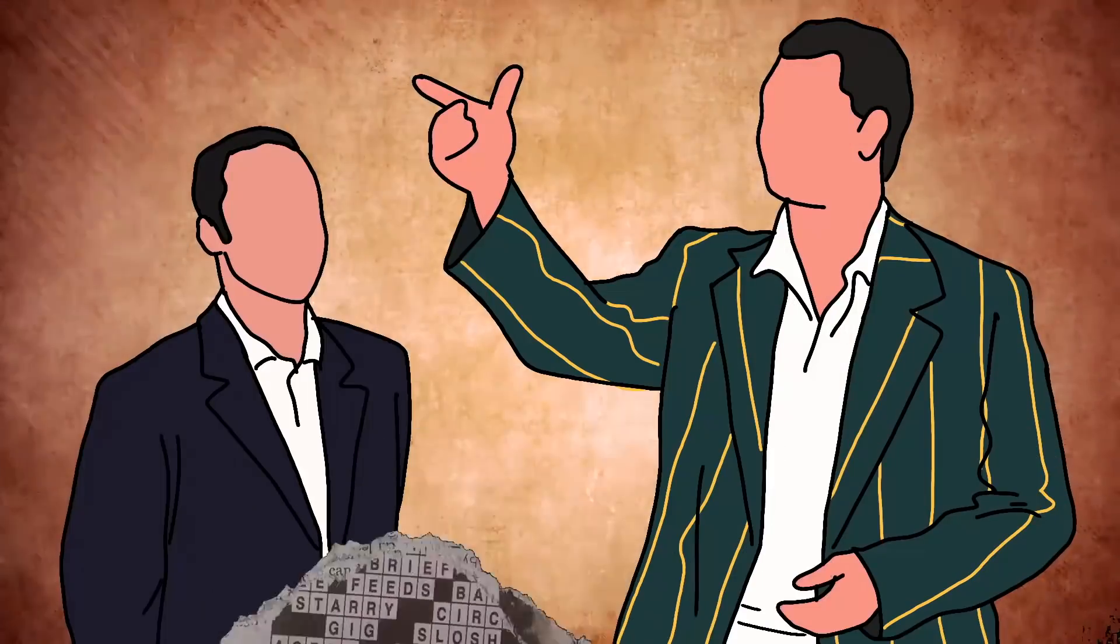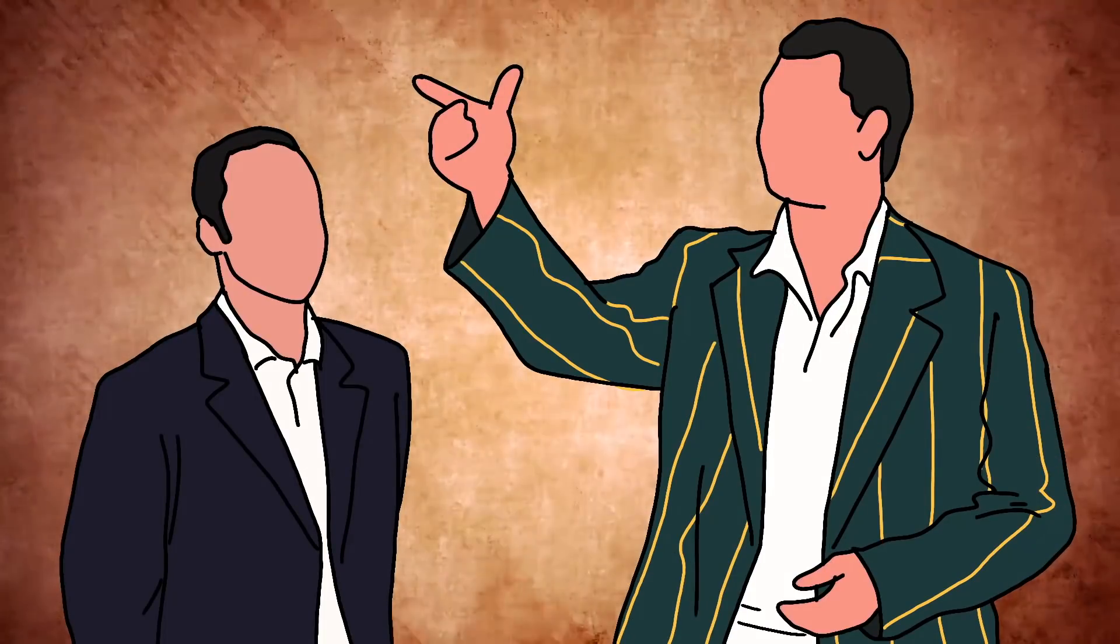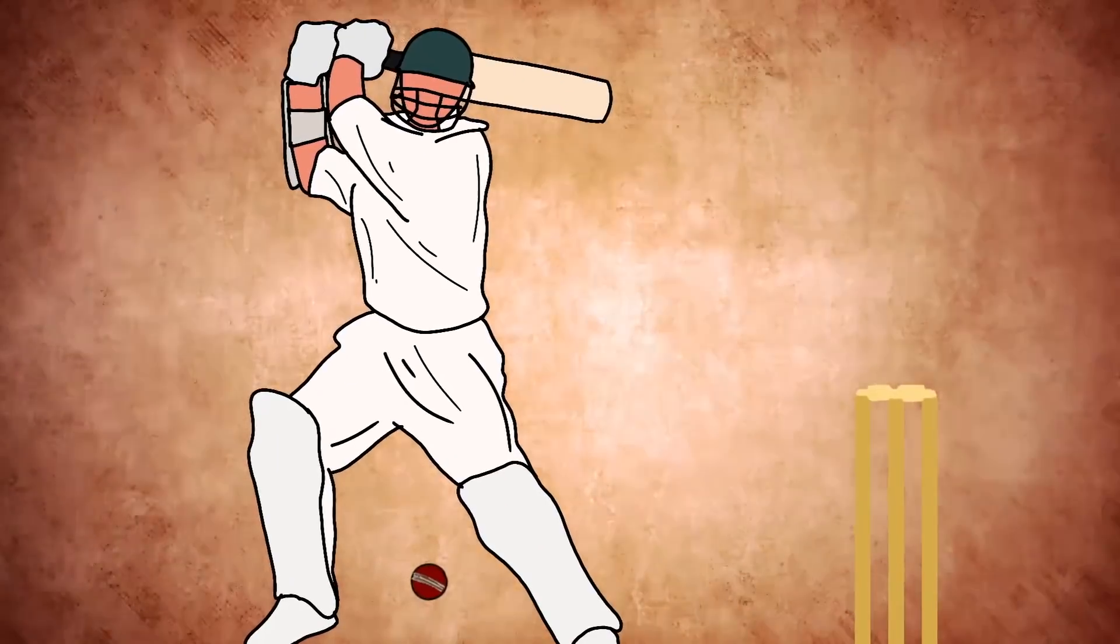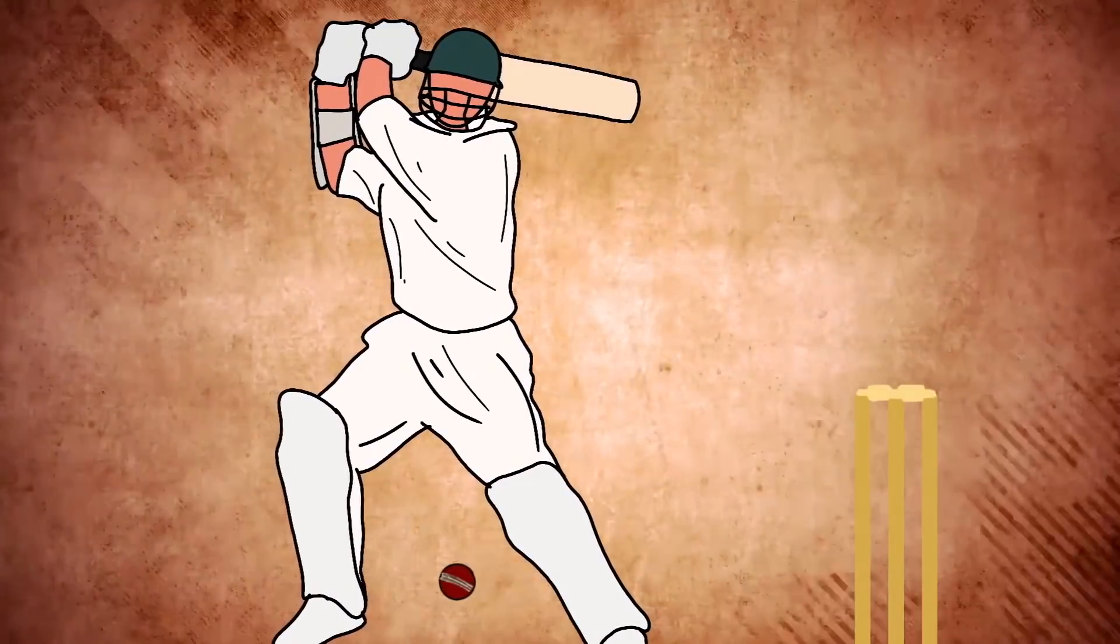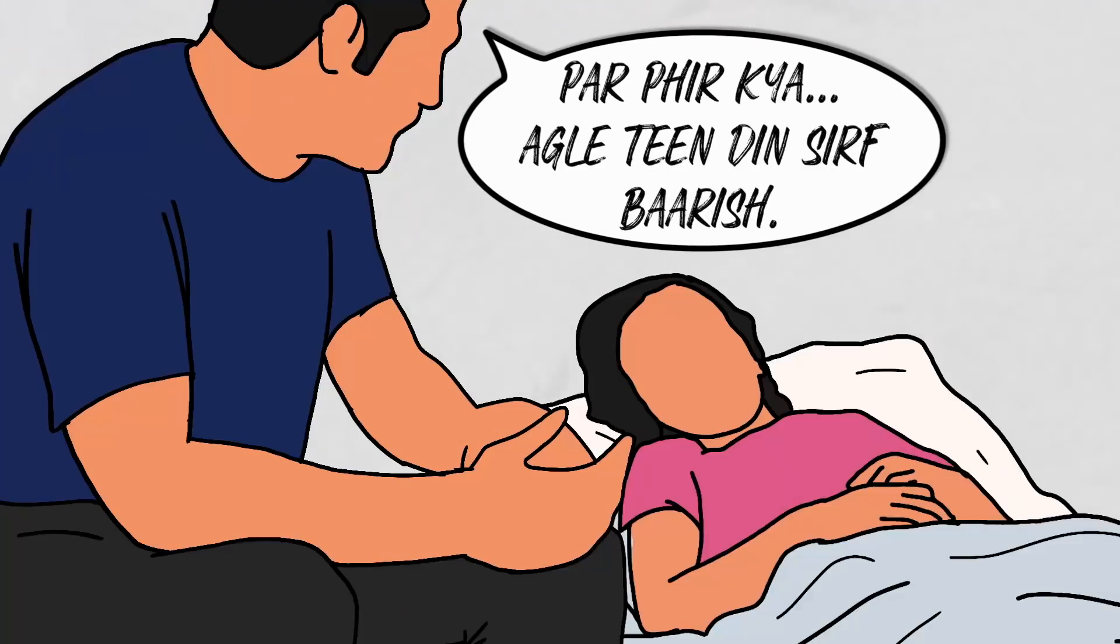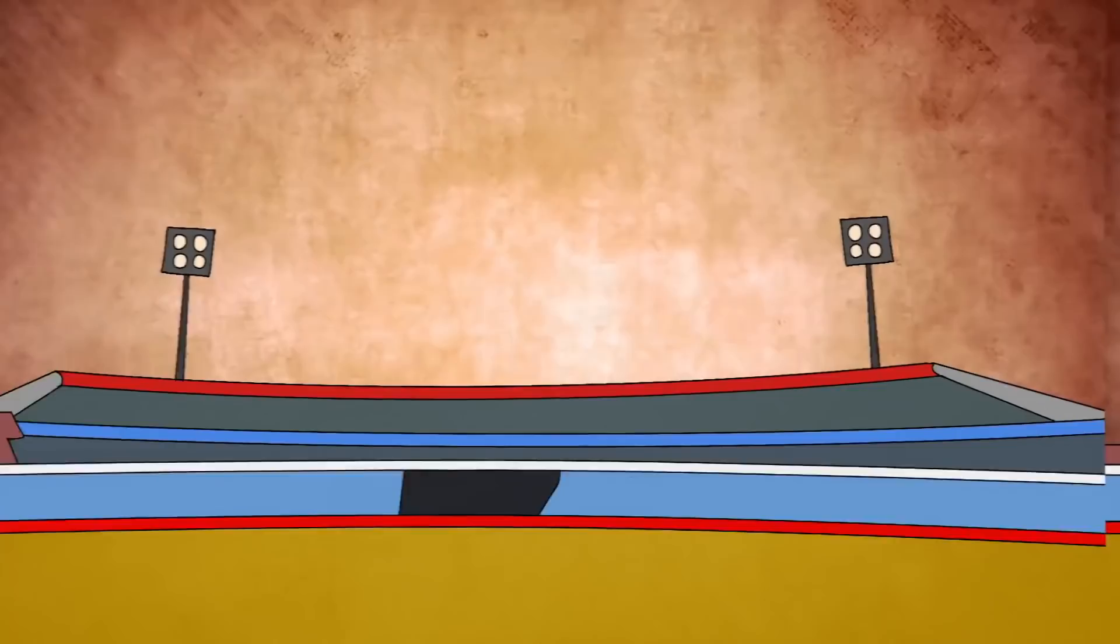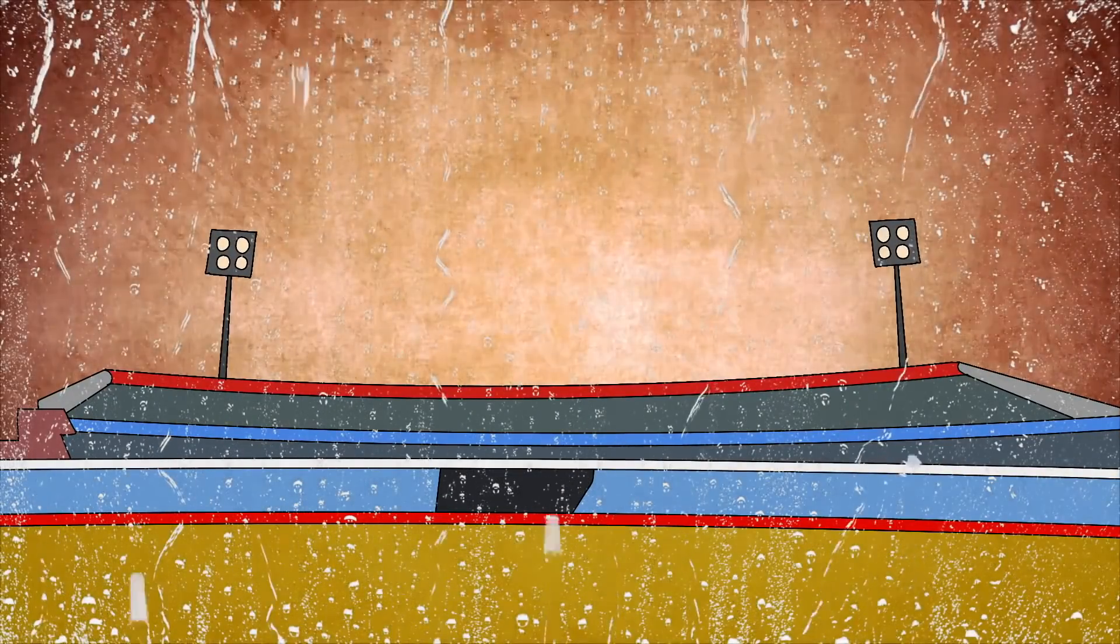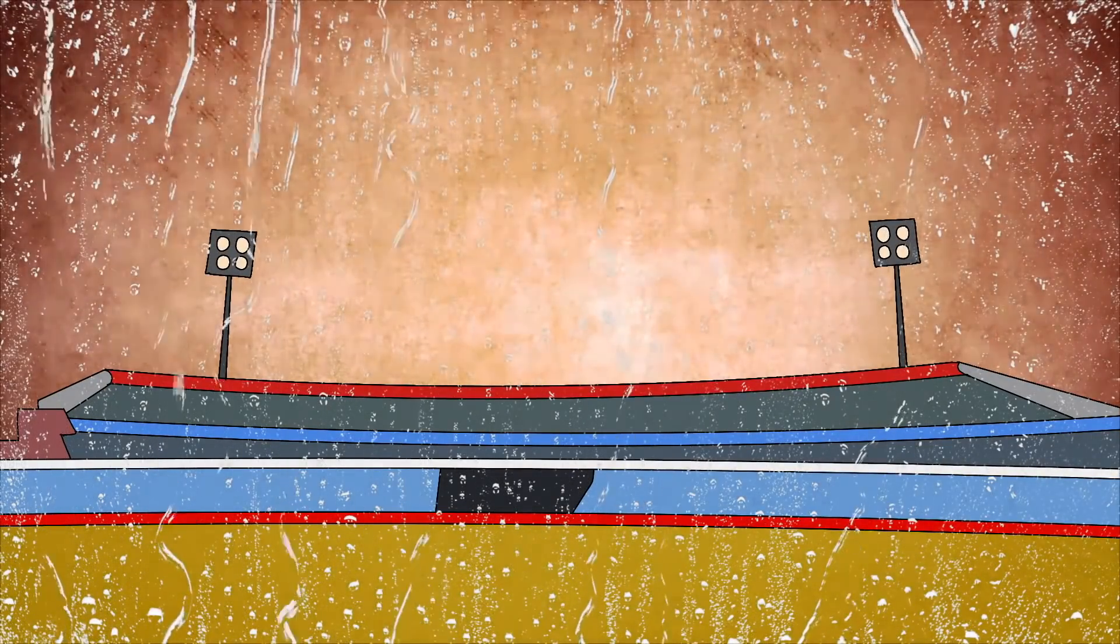Yes, the fact is, in 2000, South Africa versus England Centurion test match. First day, South Africa was very good. Match was evenly poised. But then what was it? The next three days, it just rained. Three days it rained. It was heading toward a boring draw.